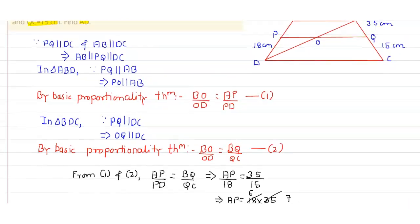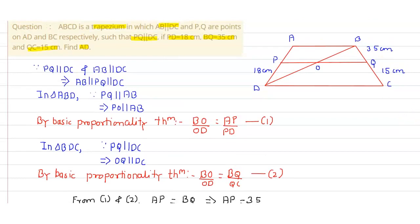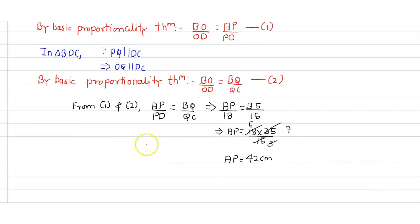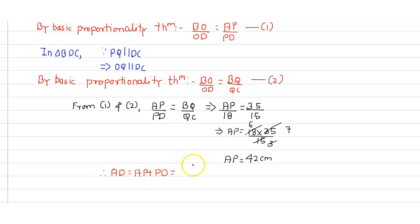Now from the figure, AD equals AP plus PD. So AD equals 42 plus 18, which gives us 60 centimeters.